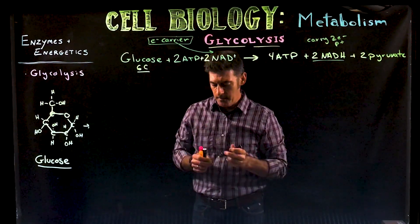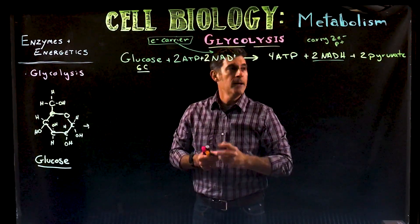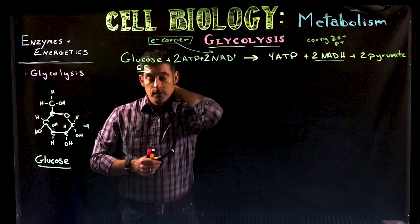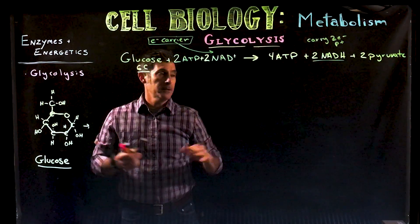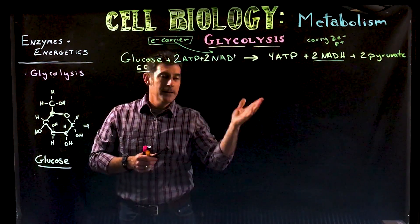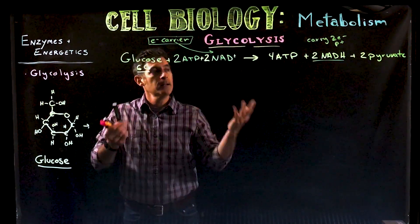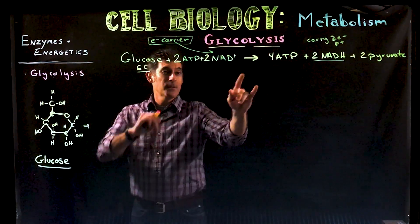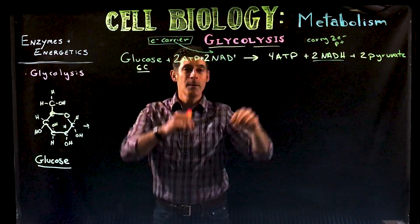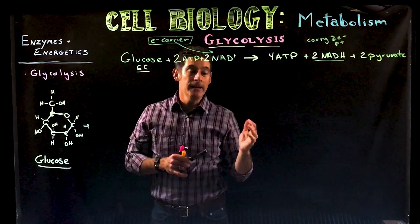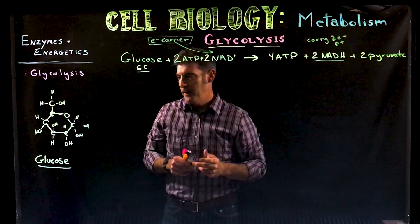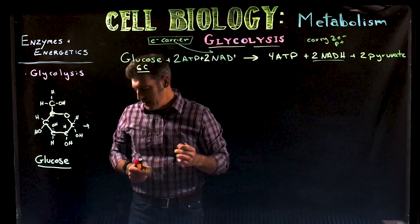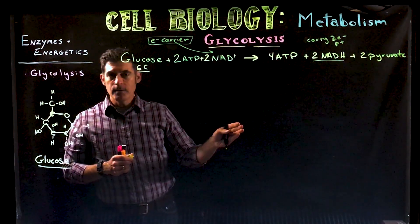This is the basic equation you should know: be able to write it out and answer specific questions — how many NADH are made in glycolysis, how many ATP are made, and know the difference between how many are made versus how many are gained, because you only gain two.